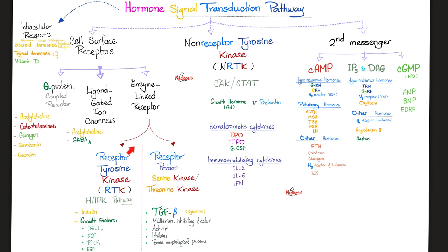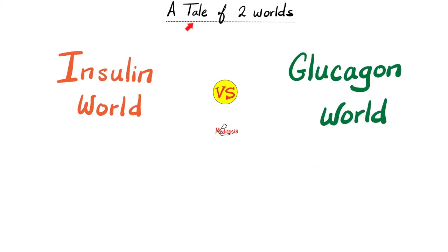Today we're talking about receptor tyrosine kinase for insulin and growth factors, such as IGF-1, FGF, PDGF, and EGF — insulin-like growth factor 1, fibroblast growth factor, platelet-derived growth factor, and epidermal growth factor. Growth factors are here, but growth hormone is here — big difference.